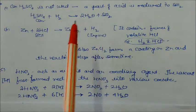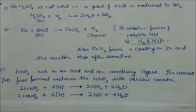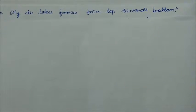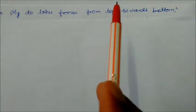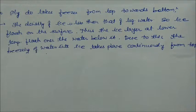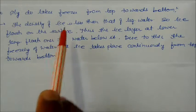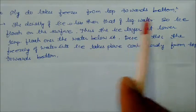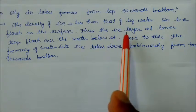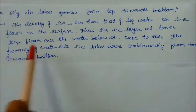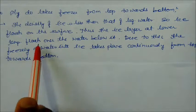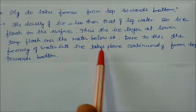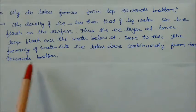Why do lakes freeze from top to bottom? The reason is the density of ice is less than that of liquid water. Ice floats on water, so ice layers form at the surface at lower temperature. First ice is formed and it floats over the water below it, so freezing of water into ice takes place continuously from top towards bottom.